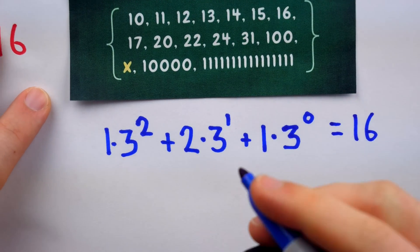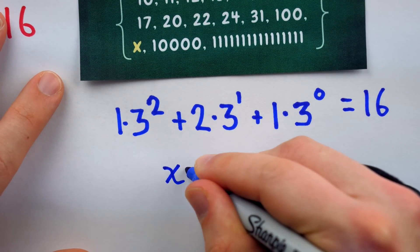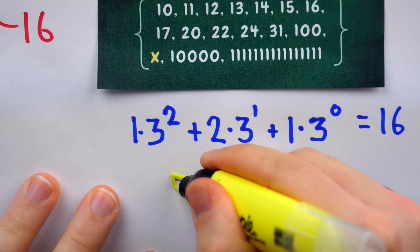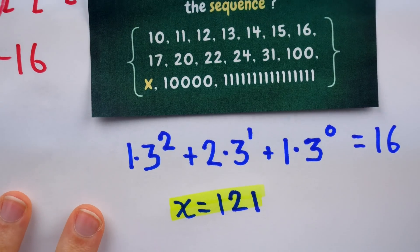So x, which is 16 in base 3, is 121. And that's the solution to this pretty good sequence problem.